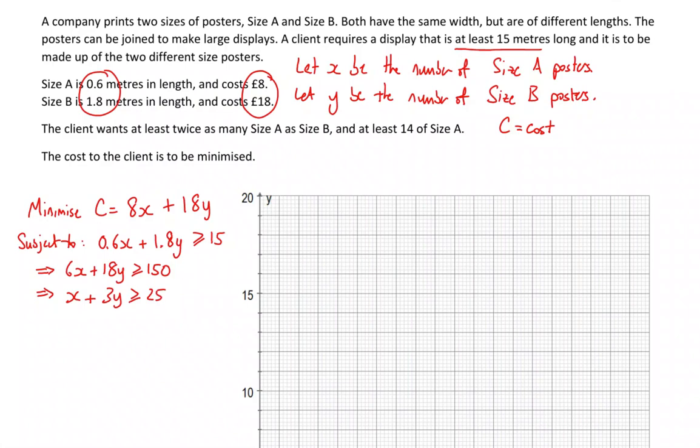I'm also told that the client wants at least twice as many size A as size B. This is one of the trickiest constraints to write down. When we say at least twice as many size A as size B, if x is 10, so there's 10 of size A, then I need at least 20 of size B.